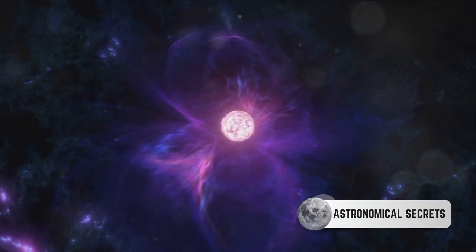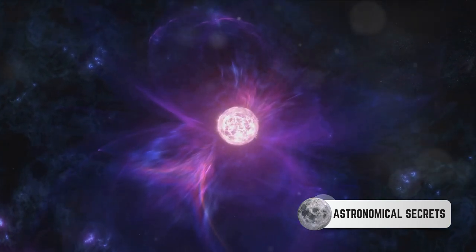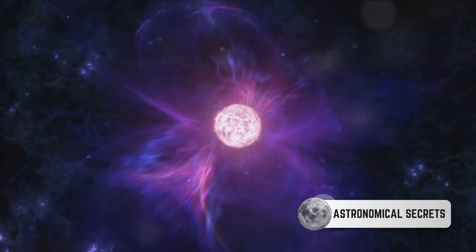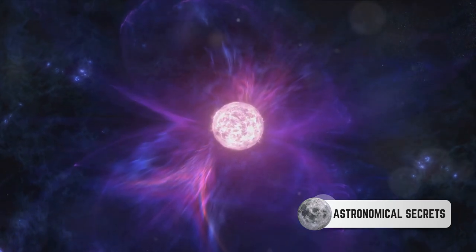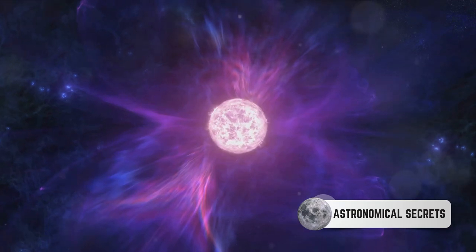When this limit is reached, things start to heat up, quite literally. The intense pressure and temperature ignite a runaway nuclear fusion, and within mere seconds, the white dwarf explodes in a brilliant supernova. This is one way a Type 1a supernova is born.